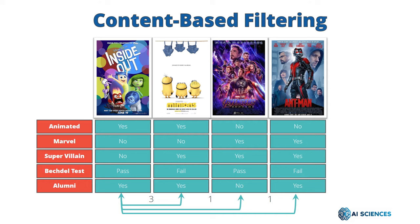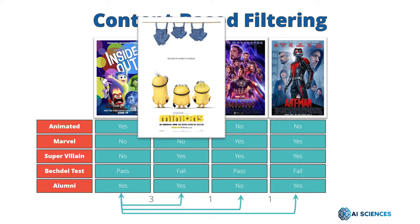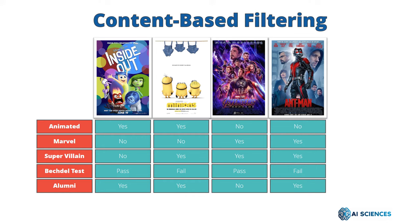Since we already watched Inside Out and liked it, based on content-based filtering the recommender system will now recommend Minions to us out of the three remaining movies. So this is the way content-based filtering works.